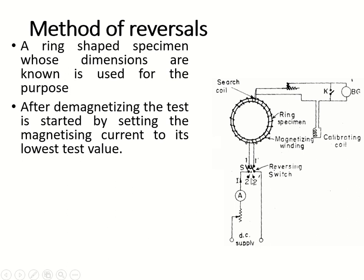We are using a reversing switch here. The purpose of the reversing switch is to provide current in both directions. If you connect switch positions 1, 2 and 1-dash, 2-dash, then current will flow from 2, 1 to the ring, 1-dash, 2-dash. If you connect the switch in reverse position — that is, 2, 1-dash, 2-dash, 1 — then current will flow in the reverse path. So you are providing current in both directions using this reversing switch.